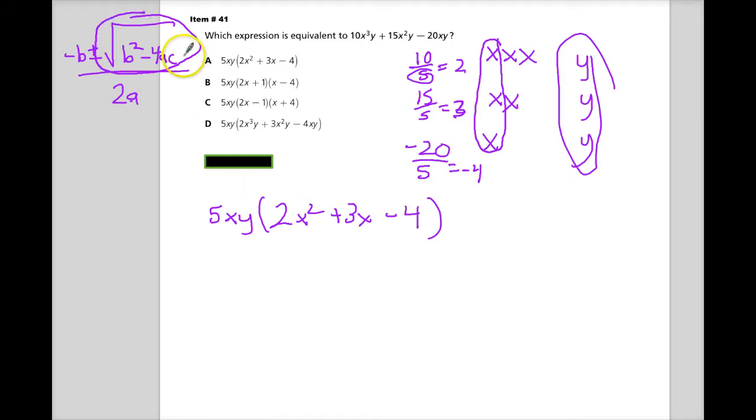That's the discriminant. So just the part inside, really. I don't know why I circled the square root. This part is the discriminant.